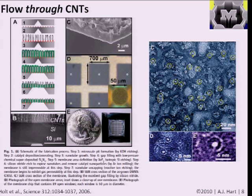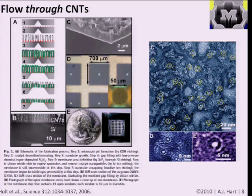They used top-down imaging to characterize the pore size distribution—average pore size of about 2 nanometers. What researchers have found studying flow through nanotubes is an extremely high flow rate, far faster than predicted by conventional models or even conventional slip models. This is because nanotubes are extremely hydrophobic: water does not like the nanotube walls, gets repelled to the center, and friction between the water molecules and the nanotube walls is very low.